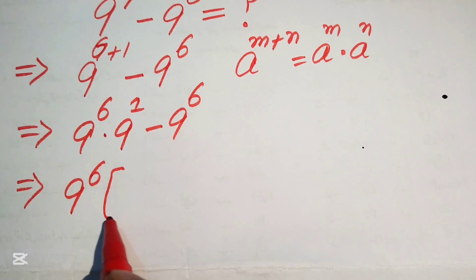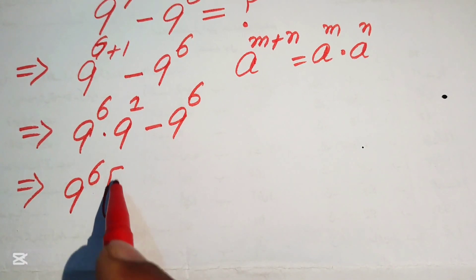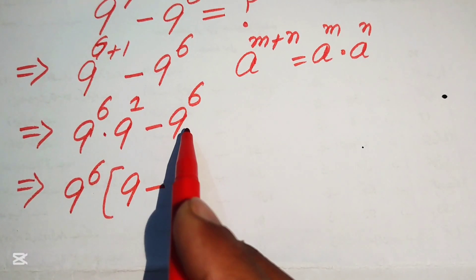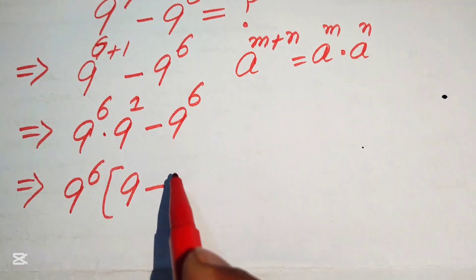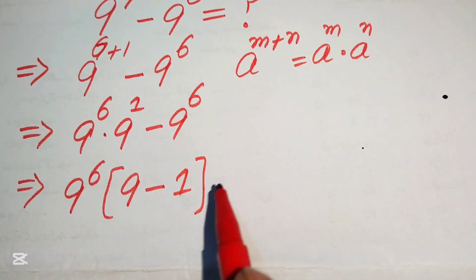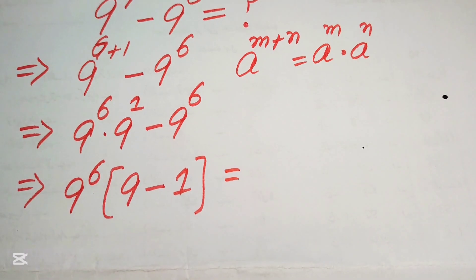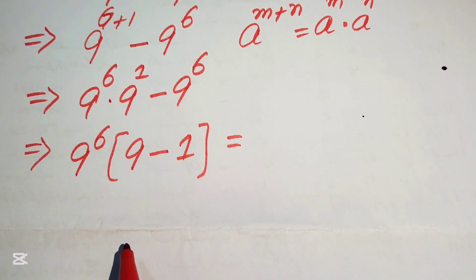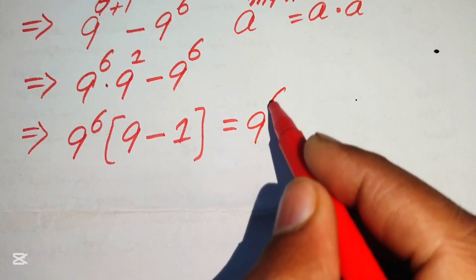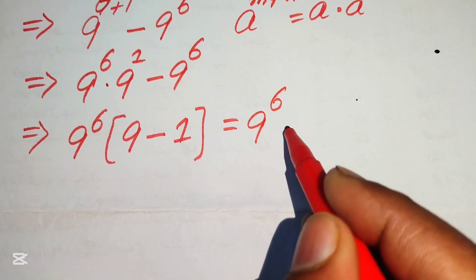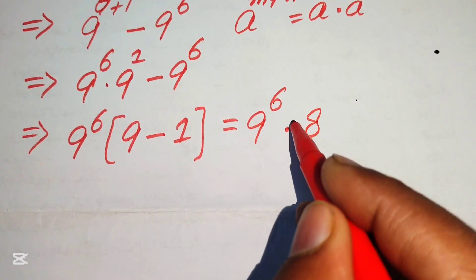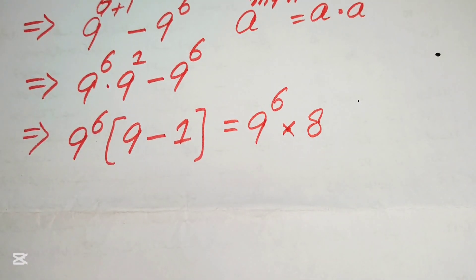You see that if we take 9 to the power of 6 as a common factor, the remaining terms are: 9 only from the first part, and 1 from the second part. So we write it as 9 to the power of 6 multiplied by (9 minus 1), which equals 8.